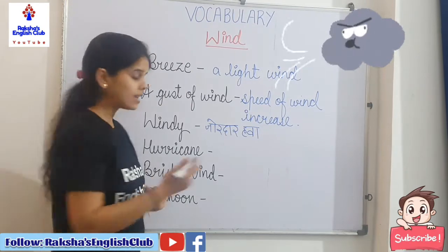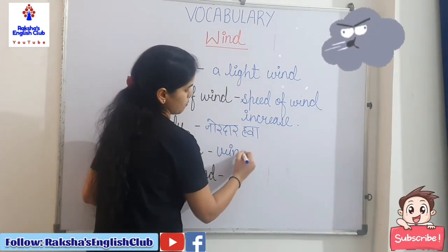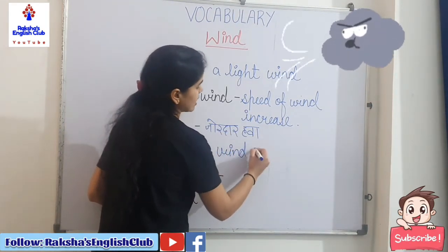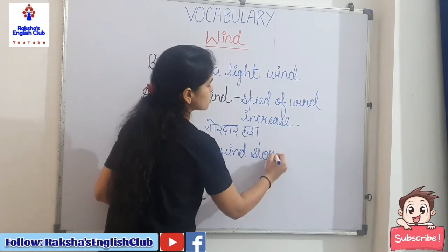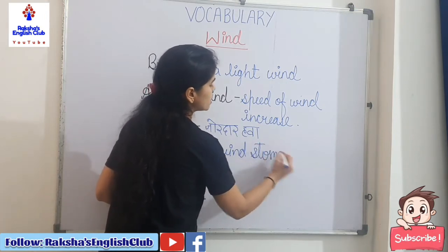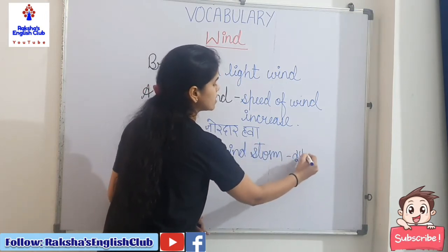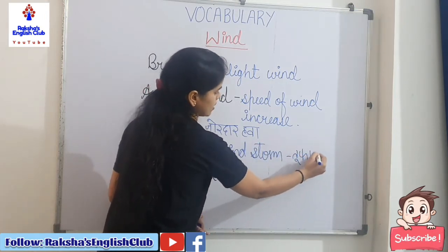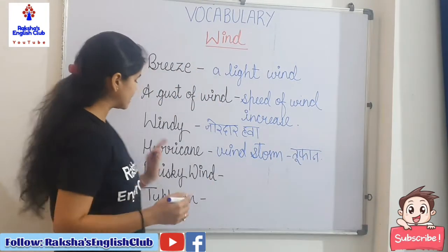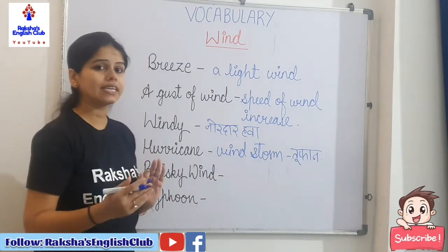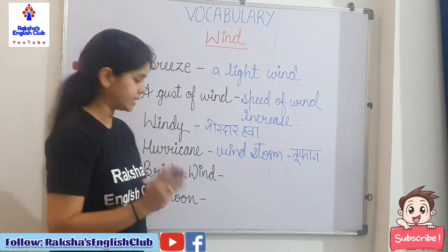Now, hurricane. Hurricane is a wind storm. Storm means tufaan — jab hi tufaani hawa hoti hai. That is called a hurricane, which damages properties.